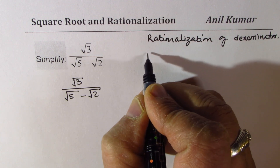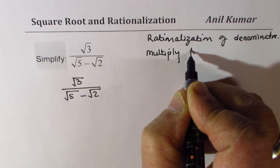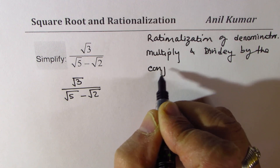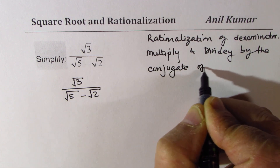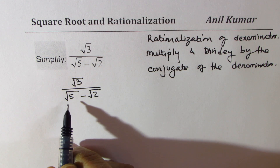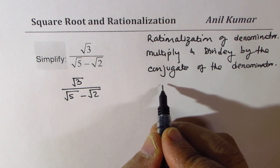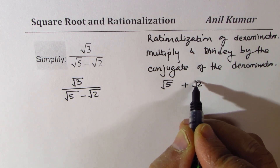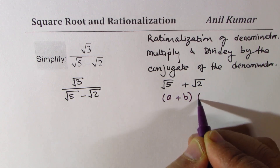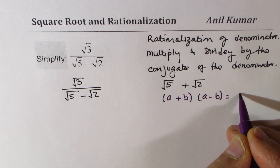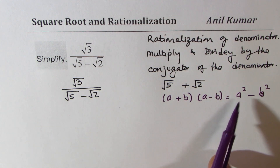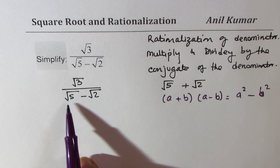We multiply and divide by the conjugate of the denominator. The denominator is √5 − 2, so the conjugate is √5 + 2. The key idea is that (a + b)(a − b) = a² − b², the difference of squares. This removes the square root sign from the denominator so we can simplify.